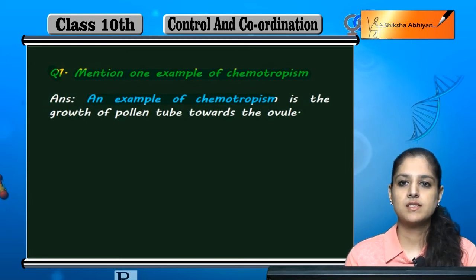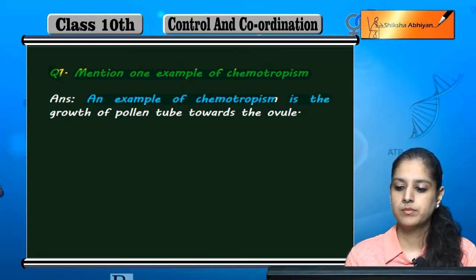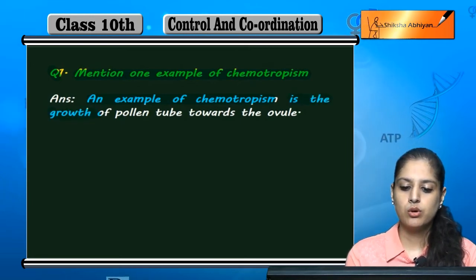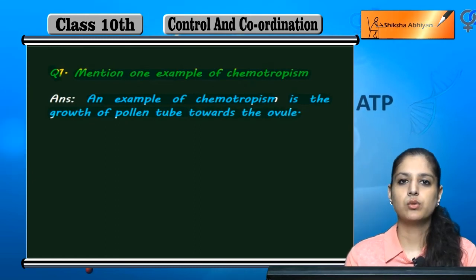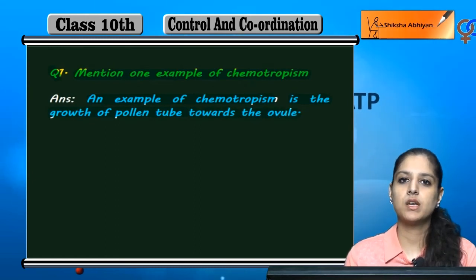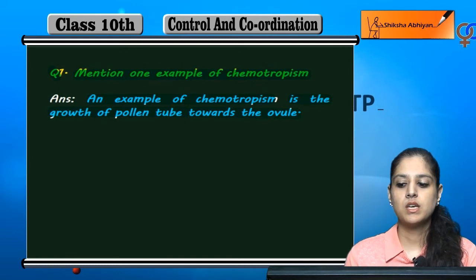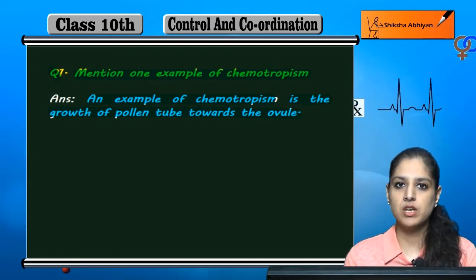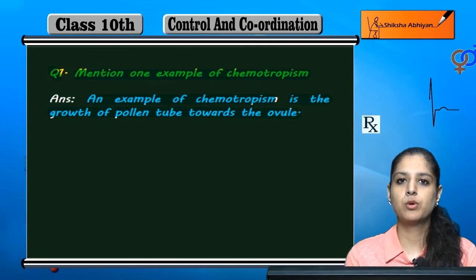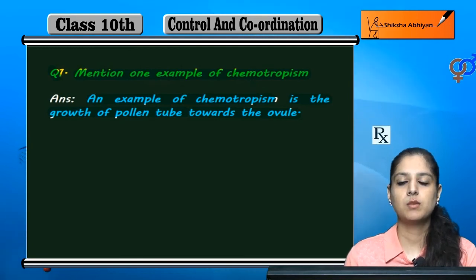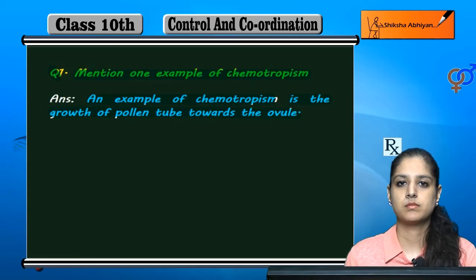Iska ek example hai: growth of pollen tube towards the ovule. Ovule ki taraf pollen tube grow karne lagta hai. Ovule ki chemical stimuli ki taraf jab pollen tube grow karti hai, to isko chemotropism kehte hai.